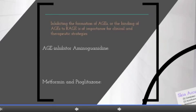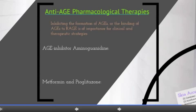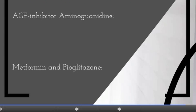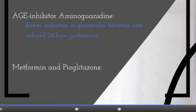Inhibiting AGE formation or the binding of AGEs to their receptor is important for clinical and therapeutic strategies. For example, administration of AGE inhibitor aminoguanidine demonstrated a slower reduction in glomerular filtration rate, reduced 24-hour proteinuria, and slower progression of retinopathy. Commonly prescribed type 2 diabetes medications, metformin and pioglitazone, have also been shown to prevent AGE formation in vitro.